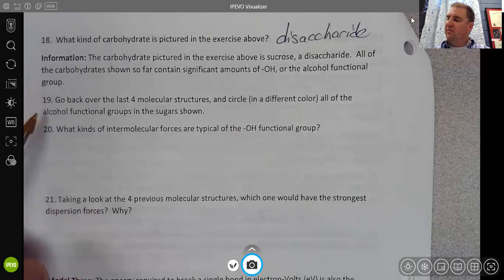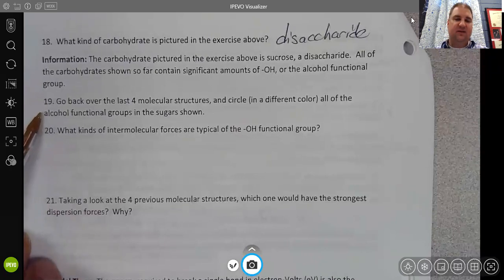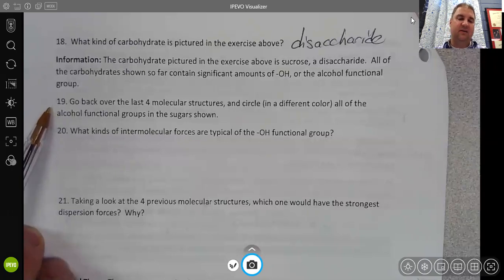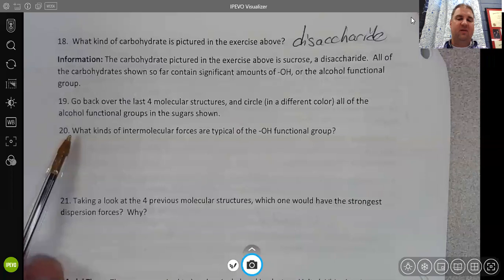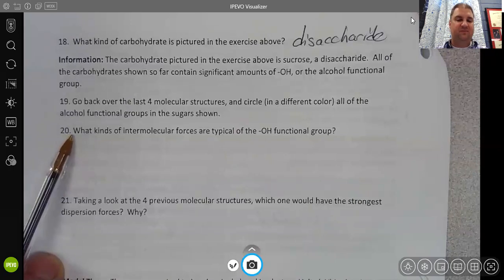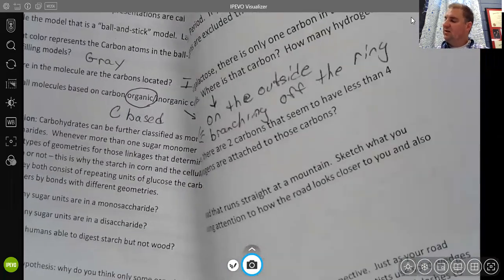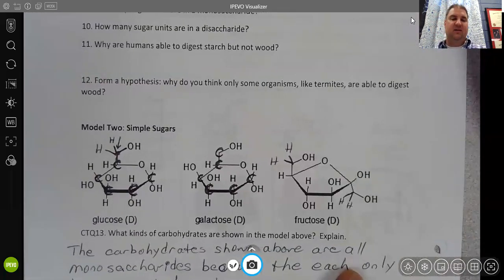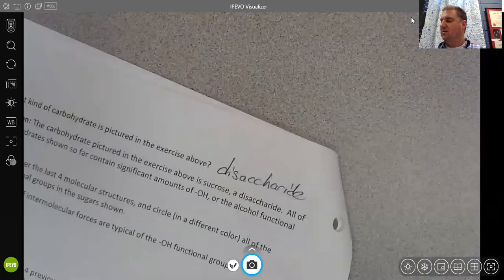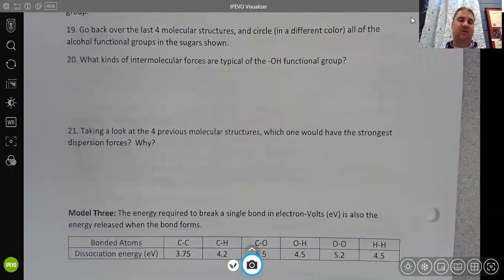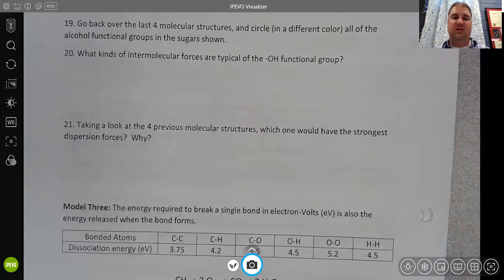And then you should want to go back and circle all of the alcohol groups in a different color, as long as you have a different color or you could use a highlighter. And then think again about intermolecular forces with the OH functional group. And then taking a look at the four previous molecular structures. So that's sucrose, fructose, galactose, and glucose. So those four structures, which of those four would have the strongest dispersion forces and why? So if you have questions about those, make sure you're asking. I hope this video is helpful as you are checking over, especially for learning how to look at molecules and see where the carbons are.